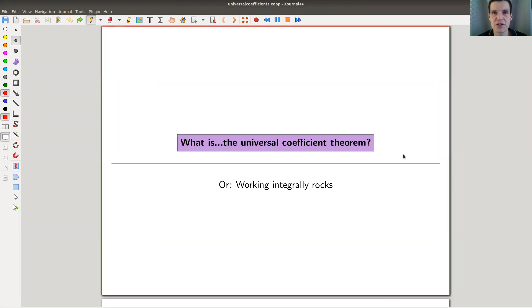Okay, welcome everyone to my continuation of what is algebraic topology. Today I would like to tell you about the universal coefficient theorem, which is strictly speaking not part of algebraic topology but actually a theorem in algebra - homological algebra, categorical algebra, whatever you want to call it.